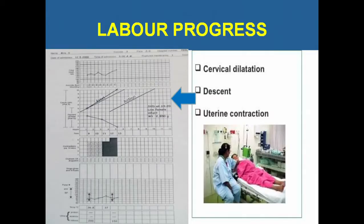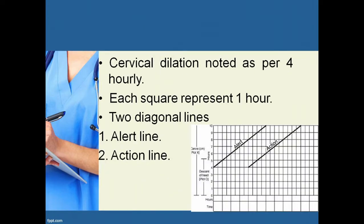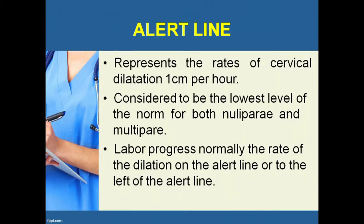Labor progress includes three things: cervical dilatation, descent, and uterine contractions. Each vertical side of the rectangle shows one centimeter dilatation; each horizontal side shows 30 minutes. Along the bottom, each square represents one hour. Cervical dilatation is assessed four-hourly. The two diagonal lines are the alert line and action line. The alert line represents the rate of cervical dilatation of one centimeter per hour, considered the lowest level of normal for both nulliparous and multiparous. Normal labor progress is to the left of the alert line.